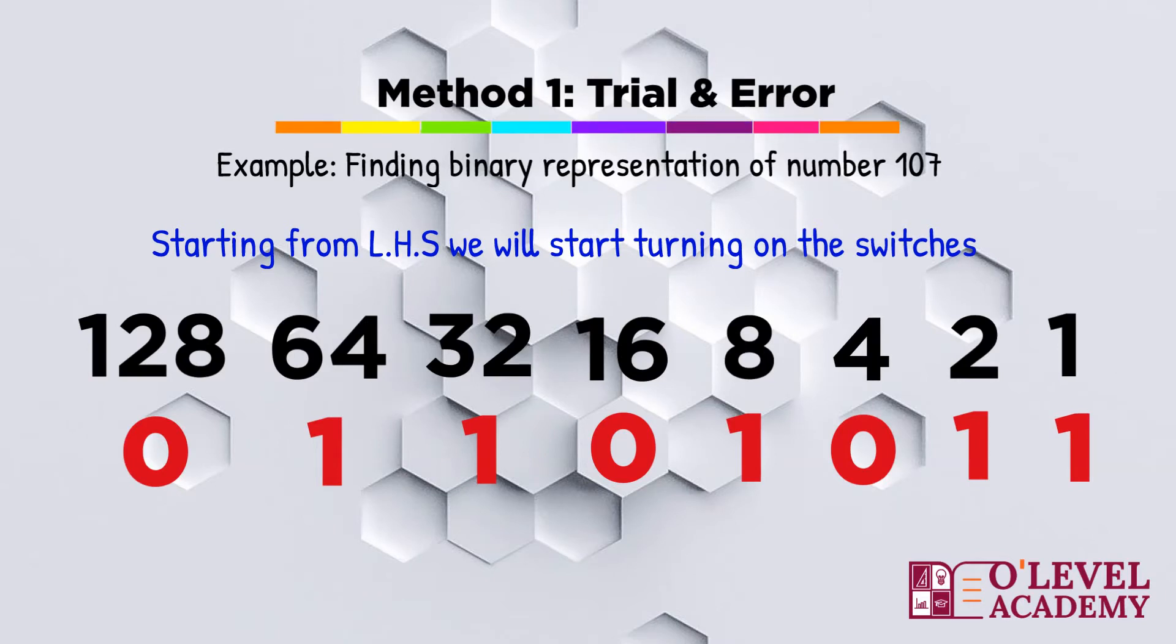Then we will move forward to 32. 64 plus 32 makes 96 which is still less than 107 so we will turn ON 32. However, if we add 16 into 96 it will make 112 which is greater than 107 so this switch needs to be OFF. We will then check switch with value 8. Add the value to 96.